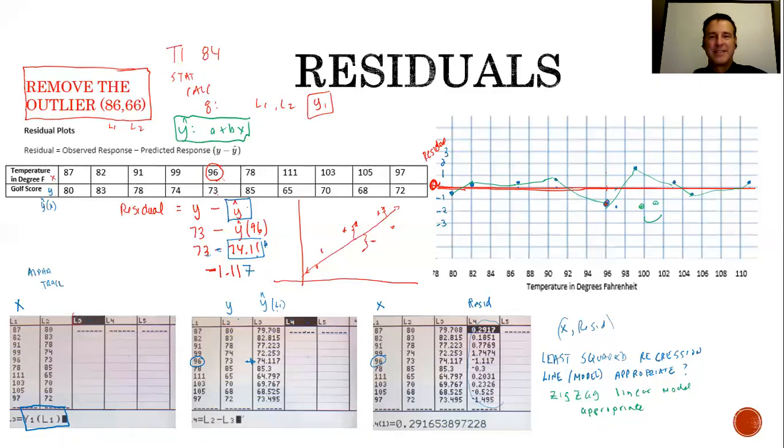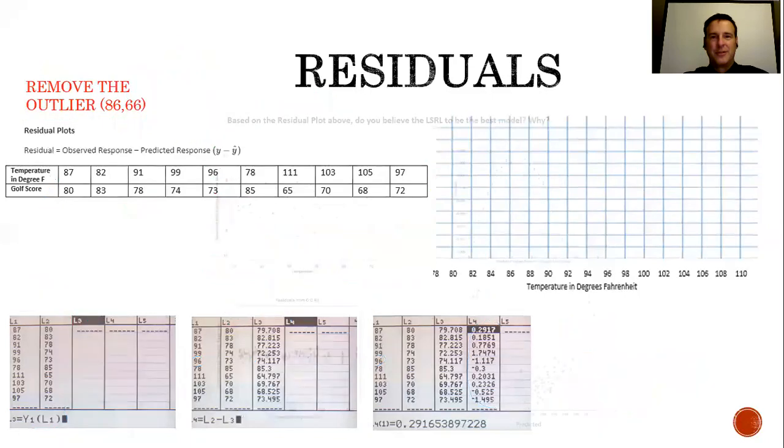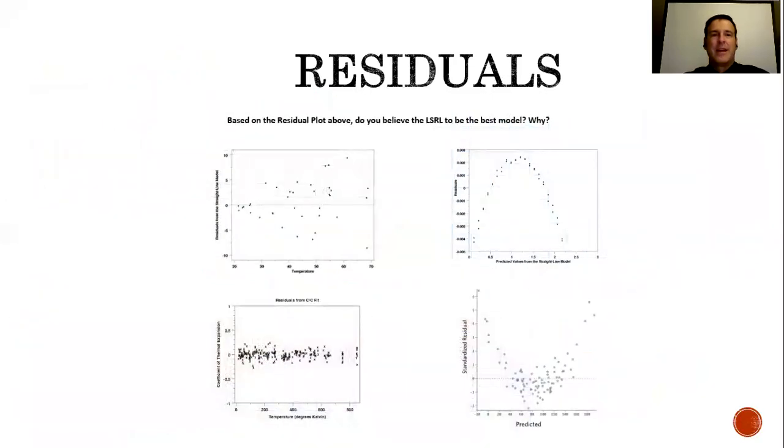Let's look a little bit more at other residuals. It says based off these residual plots, do you believe the least squared regression line model is good? This again leads to what we have. As you read this from left to right, you can see that there is a bunch of zigzags. The answer is yes, the linear model is good. If you looked at this bottom one, you can see yes it zigzags back and forth, which means the linear model is appropriate.